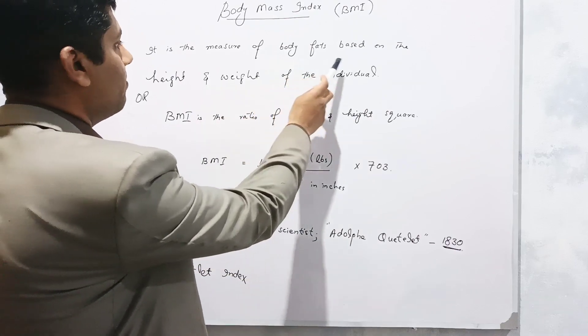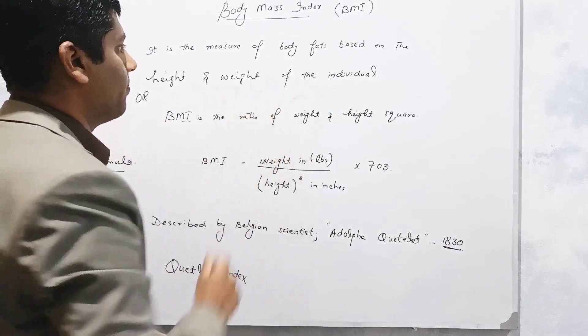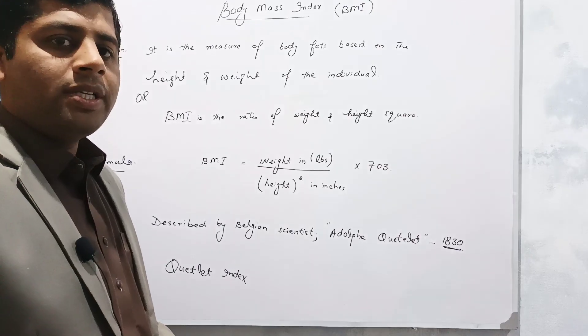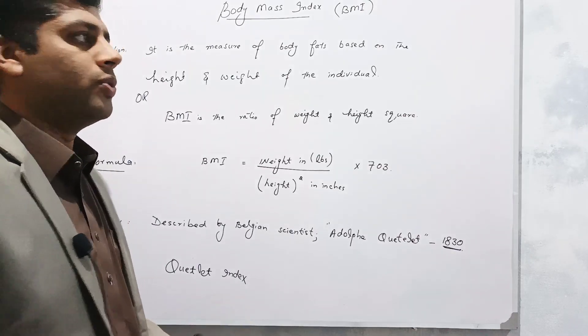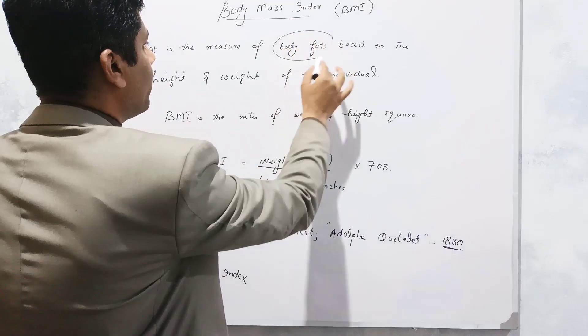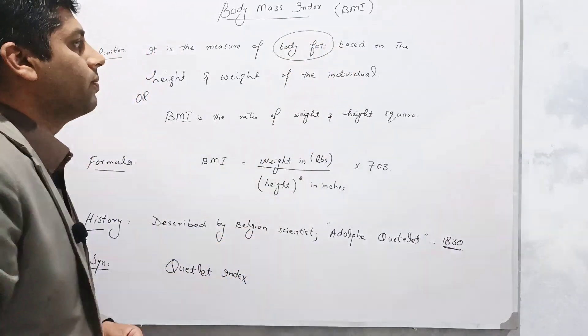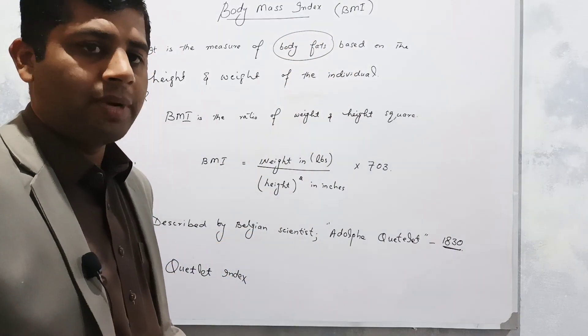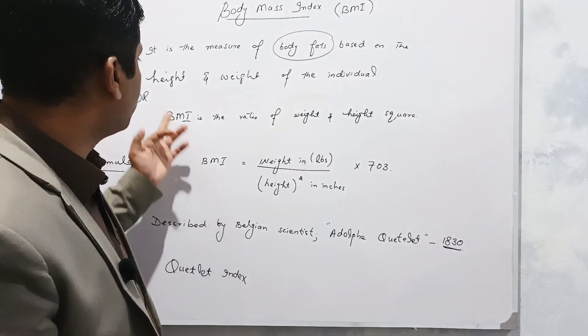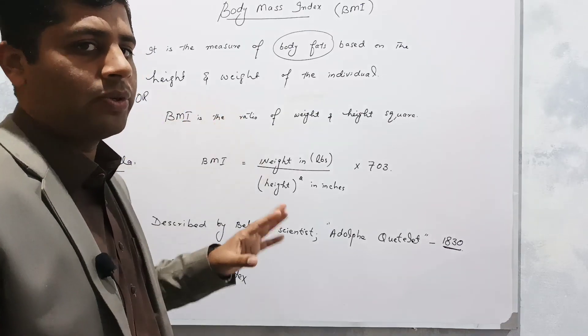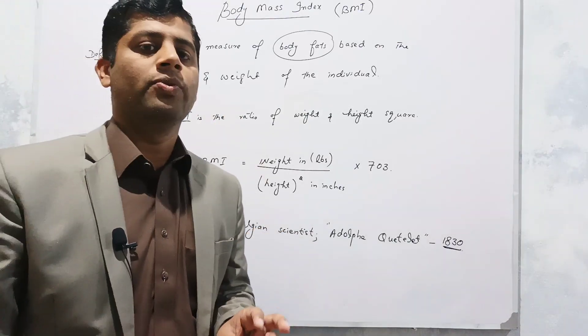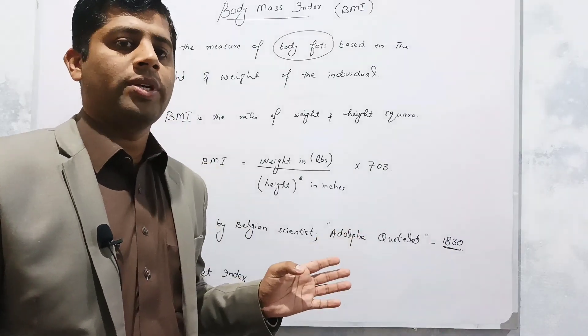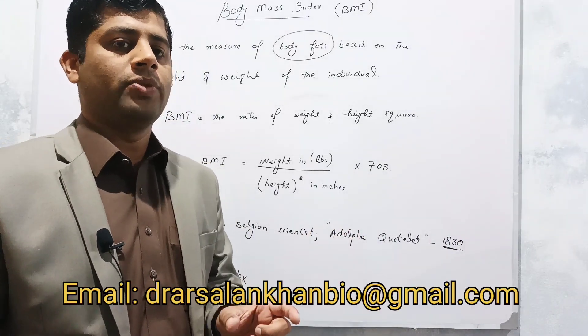First of all, what is BMI? It is the measure of body fats based on the height and weight of the individual. Basically, if we want to determine the body fats of an individual, we use the technique of BMI. In this method we need height and weight of that individual. If we know the height and weight, we can easily calculate the body fats contained in that individual.